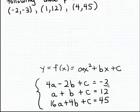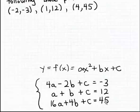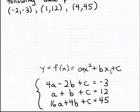Here is that three by three system of equations. The first equation is: 4a minus 2b plus c equals minus 3. The second equation is: a plus b plus c equals 12. The third equation is: 16a plus 4b plus c equals 45. So we have three equations and three unknowns — a, b, and c — which are the coefficients of the terms in the formula for the parabola.